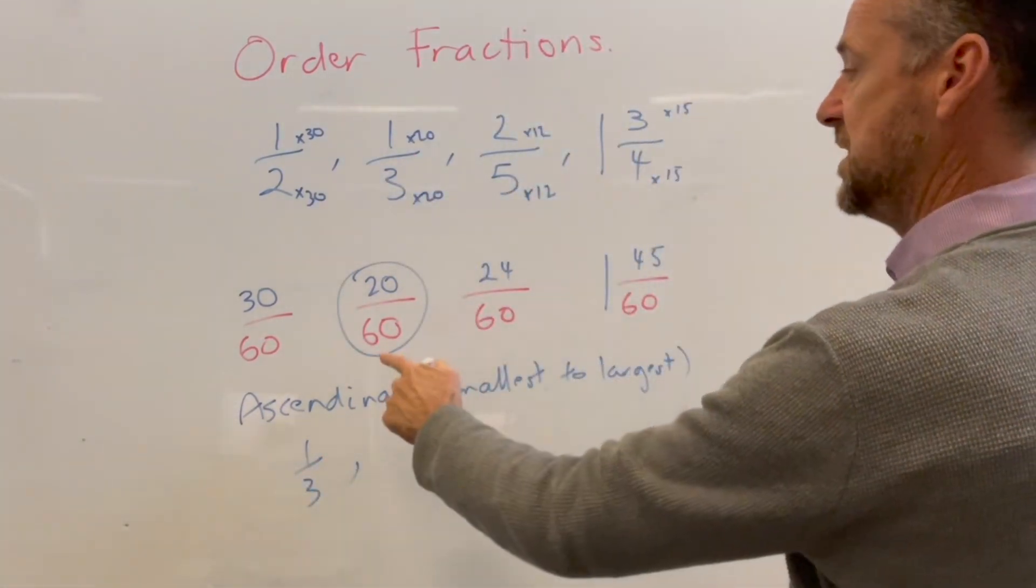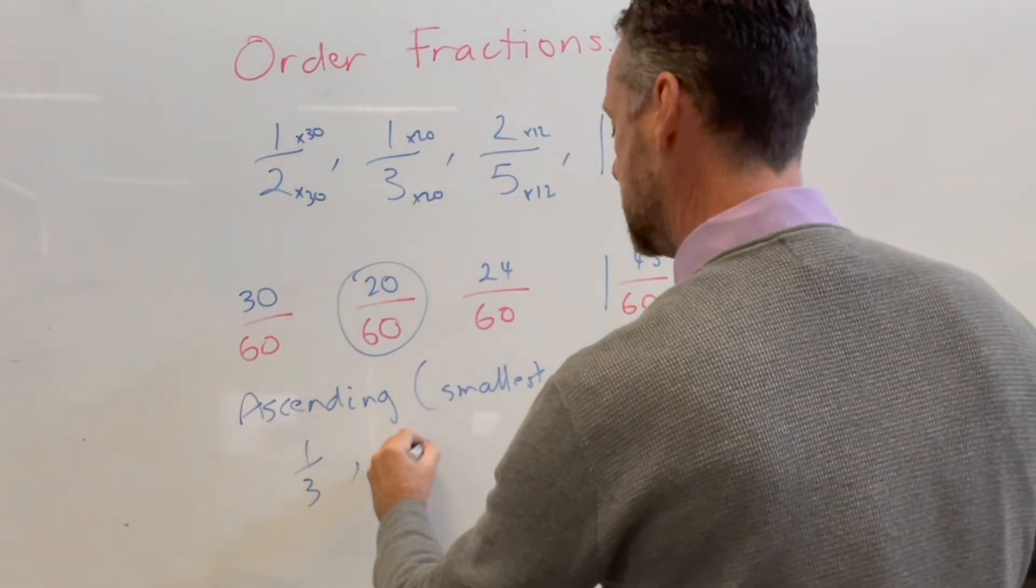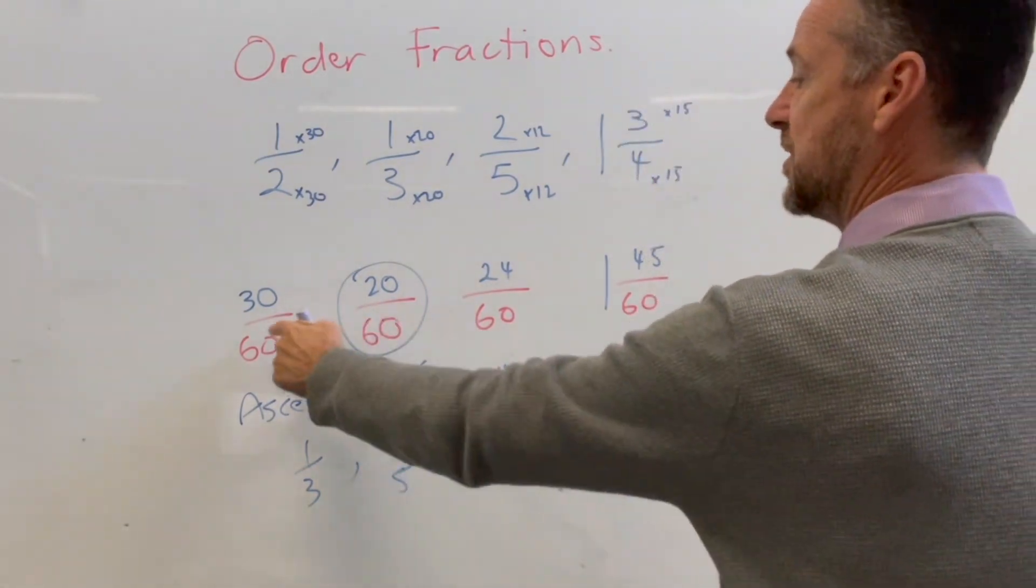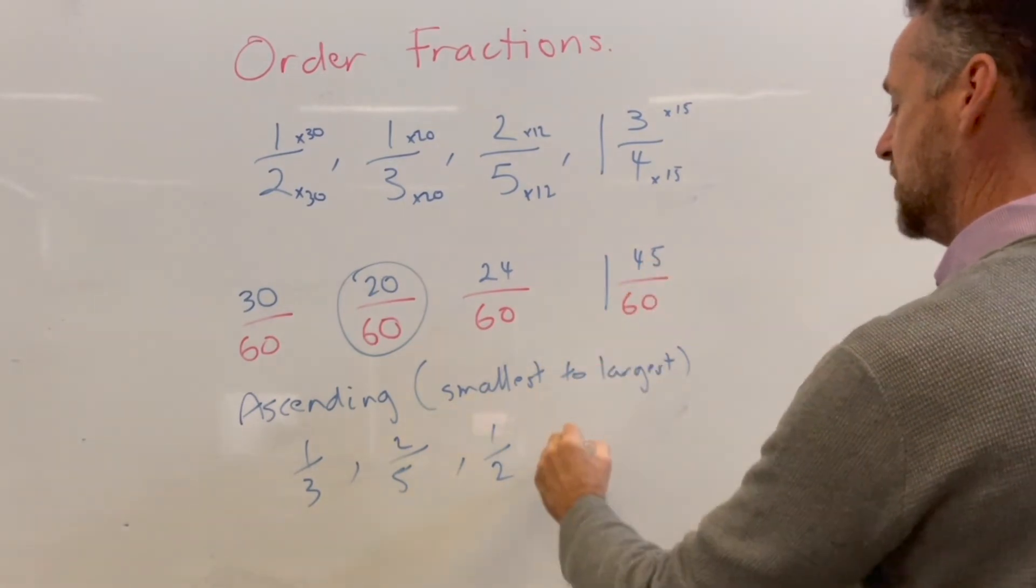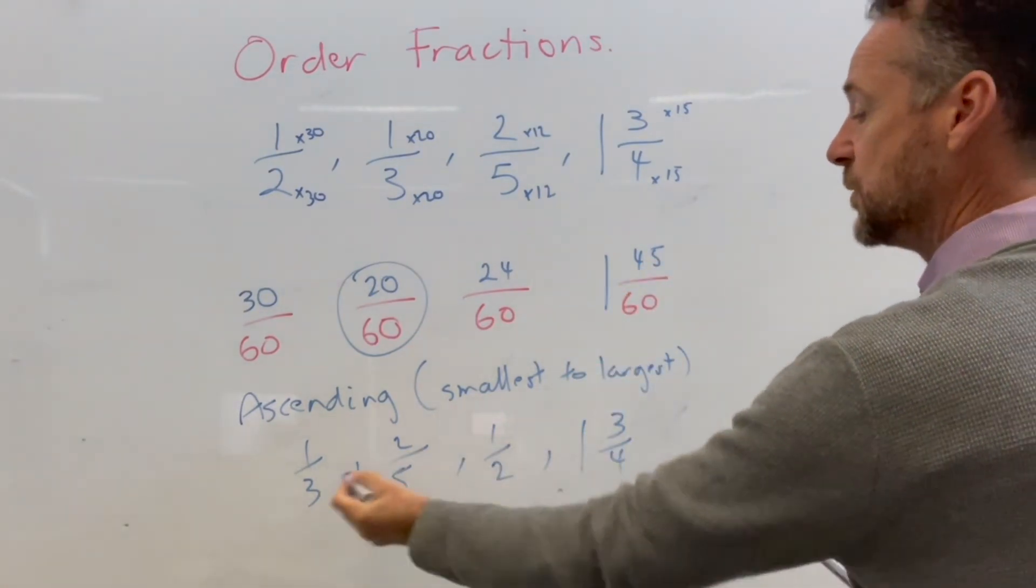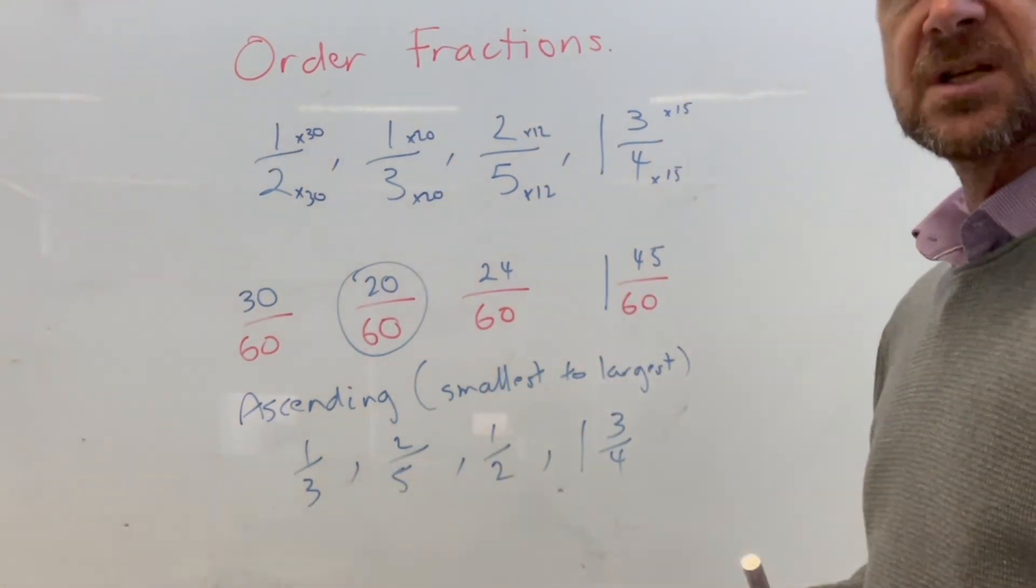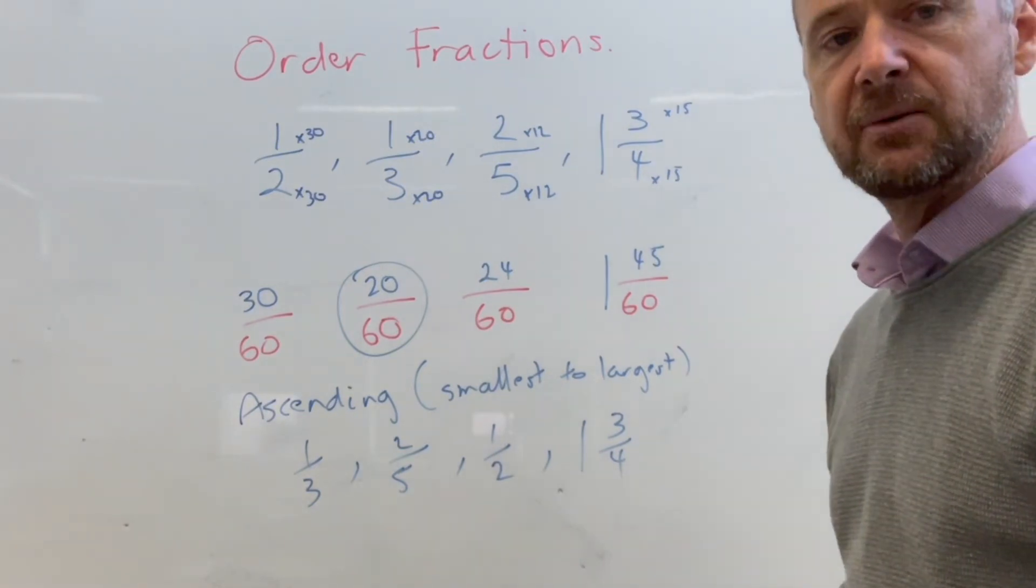The next smallest is this one here, which is two fifths, followed by here, which is one half and then followed by one and three quarters. So we always use those original fractions in order to record our answer to that question.